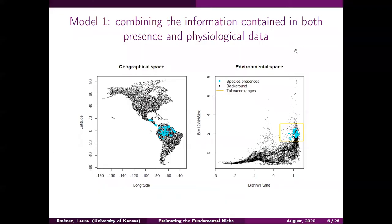Our first model addresses the problem of combining presence and physiological data to estimate the fundamental niche. Presence data are represented as reference points in geography, and for each point we get the environmental variables of interest. We can plot the presence points in environmental space. Information from physiological experiments is represented as yellow rectangles, because we only have minimum and maximum values that the species was able to tolerate. For each dimension of the environmental space, we have a tolerance range.